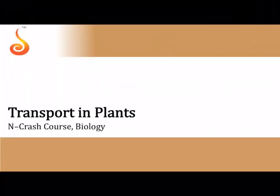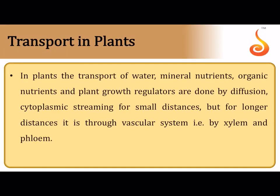Welcome to NEET crash course biology. Today we are discussing the chapter called Transport in Plants. Plants need water and mineral nutrients absorbed from the soil, and they also need to transport organic substances. For example, leaves make food in the form of starch, which needs to be transported to different parts of the plant as sucrose. Plant hormones and growth regulators also need to be transported.